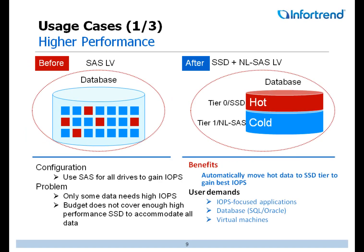In Scenario 1, we can use SSD drives to store hot data. For other data which is not accessed as frequently, it can be kept in original large capacity nearline SAS hard drives. This tiering configuration offers higher performance.